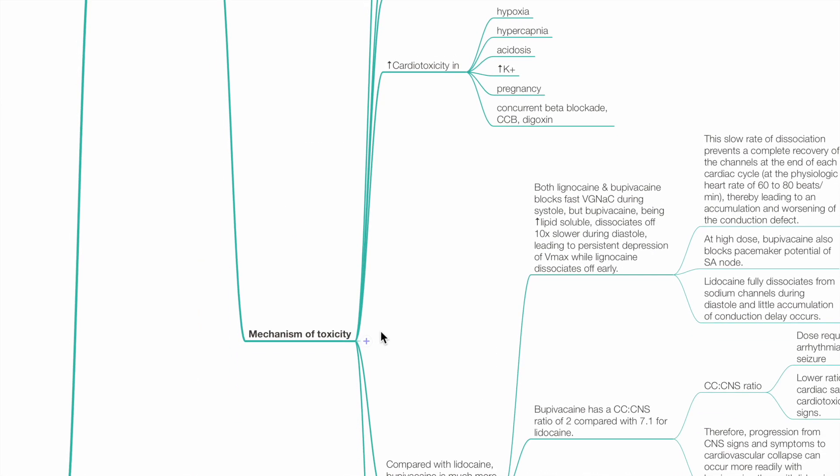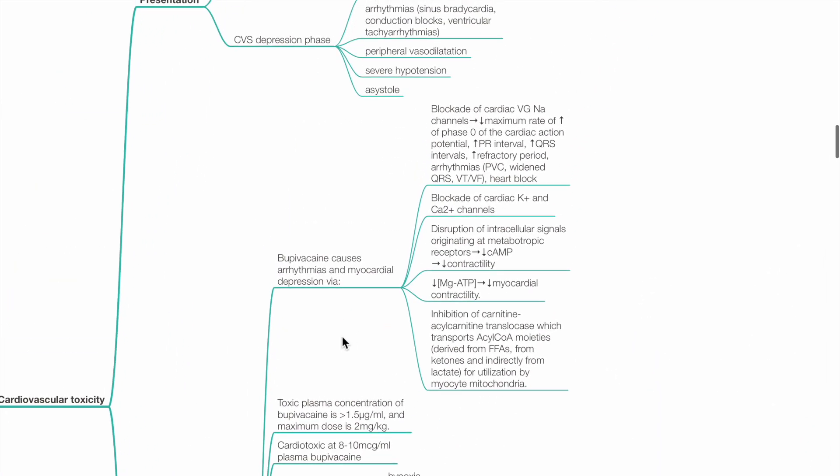Mechanism of toxicity: Bupivacaine causes arrhythmias and myocardial depression via blockade of cardiac voltage-gated sodium channels, which reduces the maximum rate of increase of phase 0 of the cardiac action potential. This causes increased PR interval, QRS interval, increased refractory period, arrhythmias, and heart block.